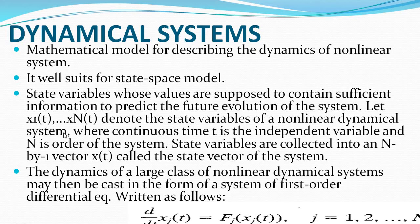N is the order of the system, and t is the continuous time independent variable represented with small t. The state variables are represented by a vector called the state vector.